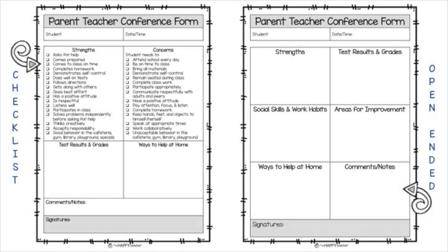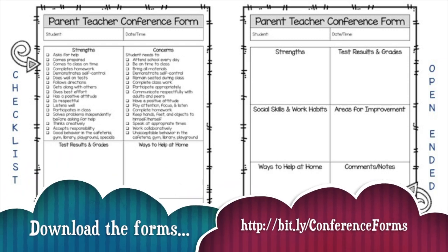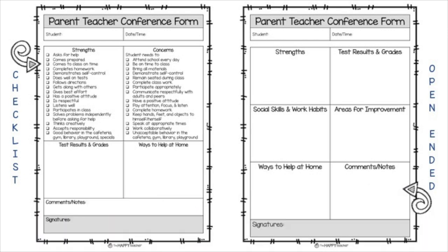Parent-teacher conferences can be overwhelming and exhausting — as we all know, it's a lot of work. The best thing I ever did was to fill out a parent-teacher conference form in advance for each child before I met with their parent. It can be a checklist or an open-ended form. You'll want to cover their strengths, social skills, work habits, test results, grades, areas for improvement, and ways that parents can help at home. Write down simple, straightforward notes that will help you stay on track during the conference.